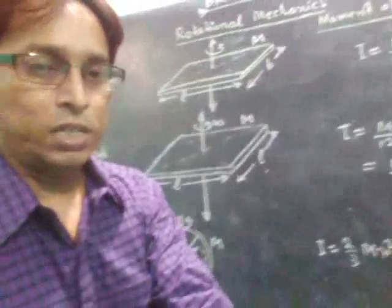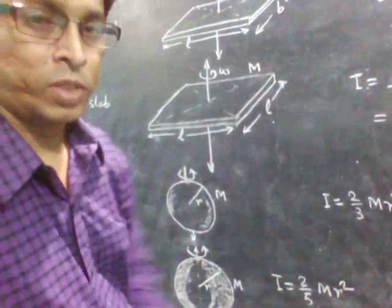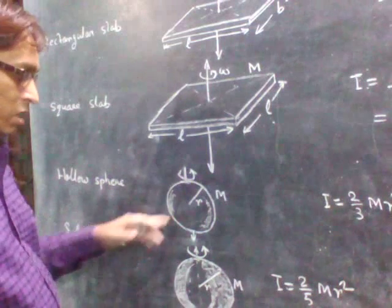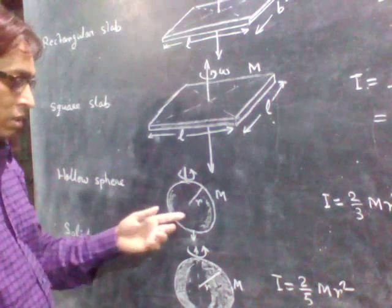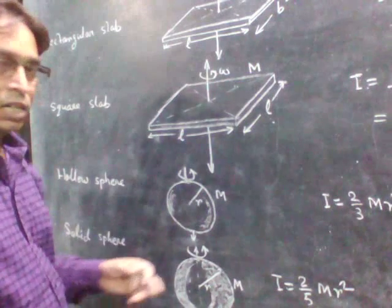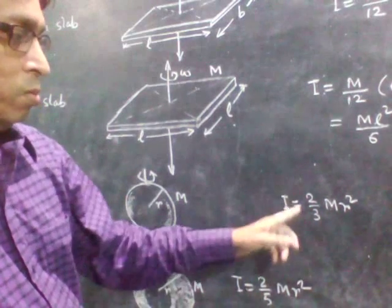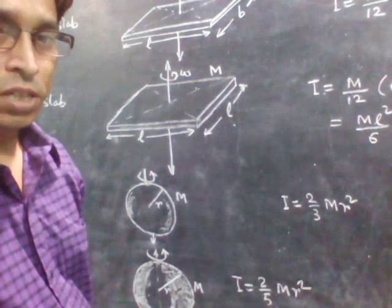And next is the hollow sphere. So this is the hollow sphere rotating about any of its axis passing through its center. So if its mass is M, radius is R, then its moment of inertia is 2 by 3 M R square. So 2 by 3 mass into radius square.